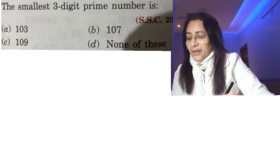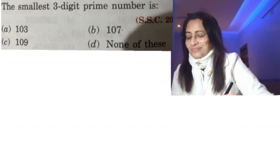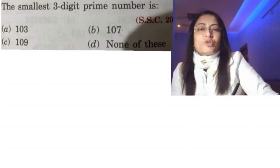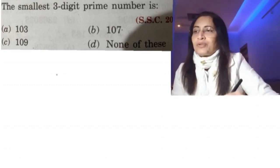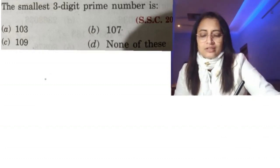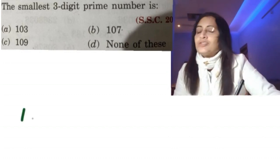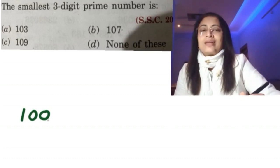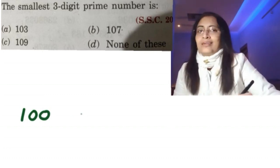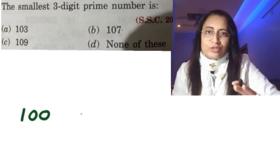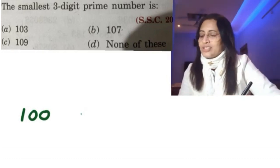Next question: the smallest three-digit prime number. Options given are 103, 107, 109, or none of these. The smallest three-digit number is 100 and the largest three-digit number is 999. I'll repeat this so you can't forget it. 100 is divisible by 2, so it is not a prime number.